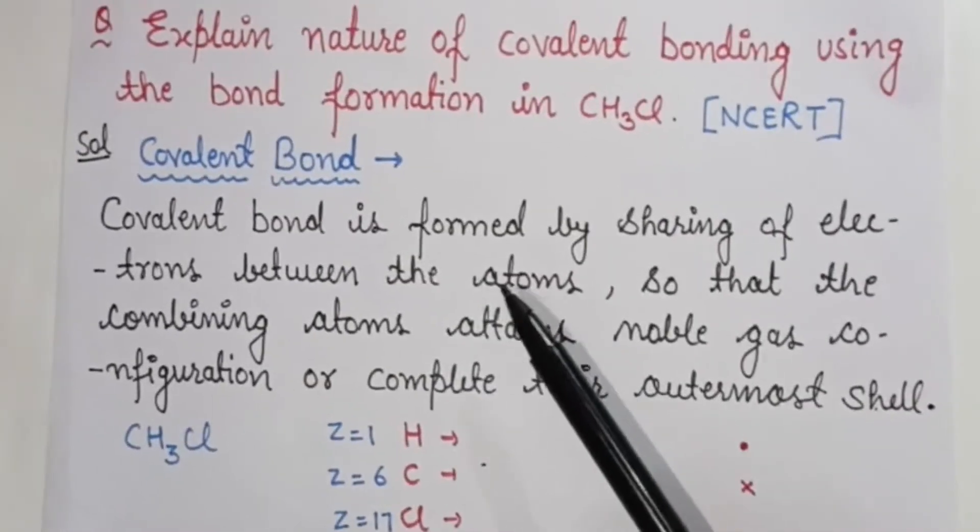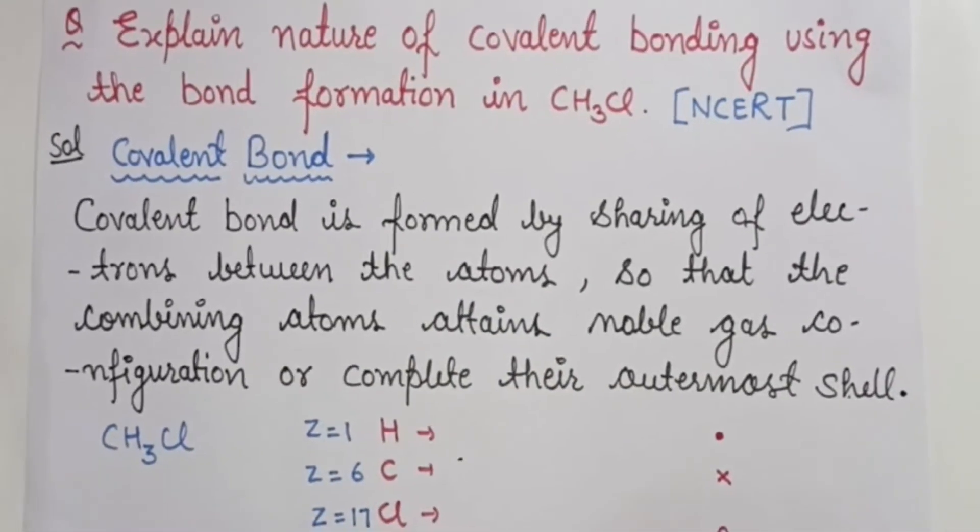This definition is saying that the covalent bond is formed by the sharing of electrons between the atoms. Atoms share the electrons so that they form covalent bond. And why do they do this?